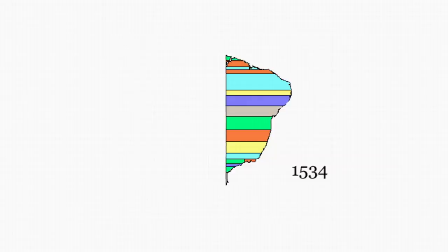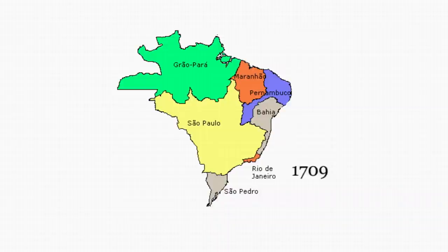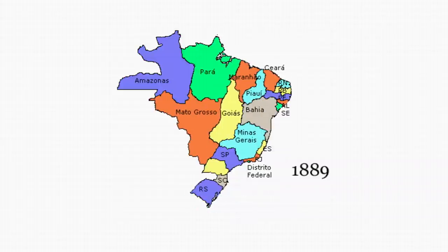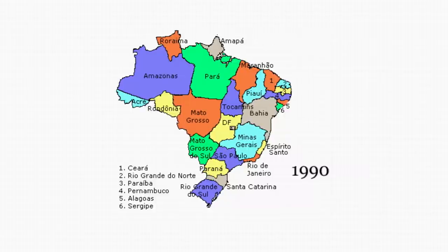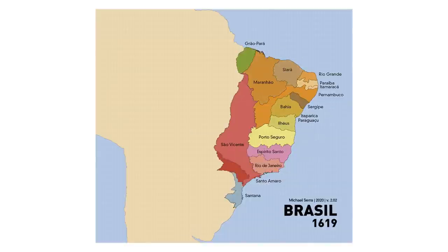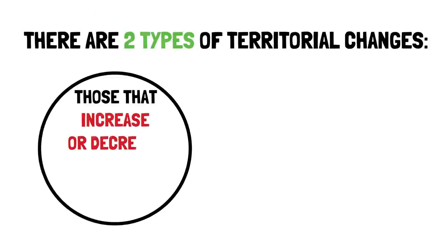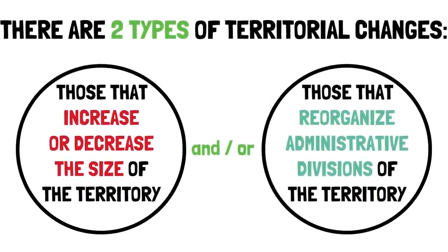First, I think we should take a look at this gif that summarizes the entire evolution, in case you don't want to watch the entire video. Then we'll go through all of the moments of change and attempt to find out what happened. The gif on Wikipedia is somewhat reduced — it shows only the big moments of change from 1534 to 1990, with eight key changes, but this is oversimplified. I found a much better gif made by Michael Serra, over two minutes long, with every single detailed change in Brazil's territory throughout time. There are two types of changes: those that increase or decrease the territory, and those that reorganize the administrative divisions.